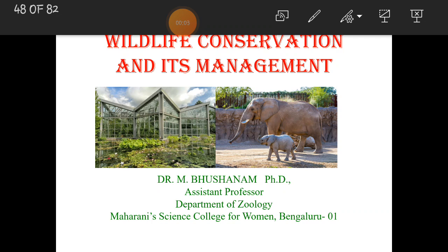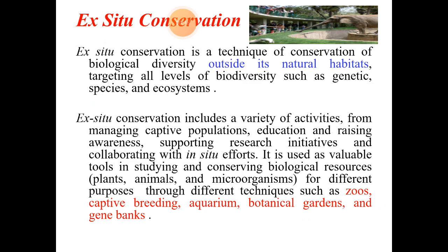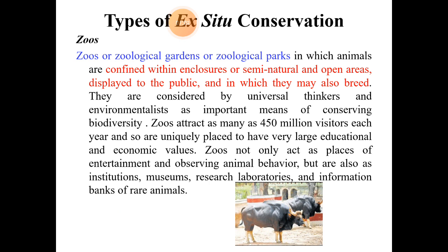Hello students. In continuation of wildlife conservation and its management, today we shall understand ex-situ conservation. Ex-situ conservation means off-site conservation, where endangered animals and plants are removed from the threatened habitat and placed in a newer location under the supervision of human beings. It includes examples of zoos, captive breeding sites, aquariums, botanical gardens, seed banks, gene banks, and pollen storage banks.